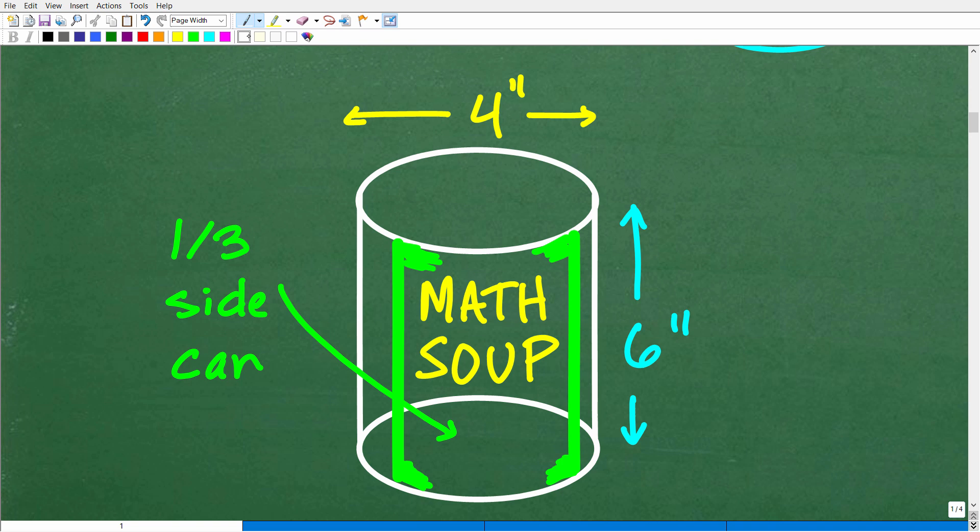Okay. So here is my can, can of whatever, it's four inches wide, six inches tall. And then I have this label. Of course here, my label says math soup and it takes up only one third of the side of the can. It doesn't go all the way around. And the object here is to find the surface area of the label. Which of course would be this part.